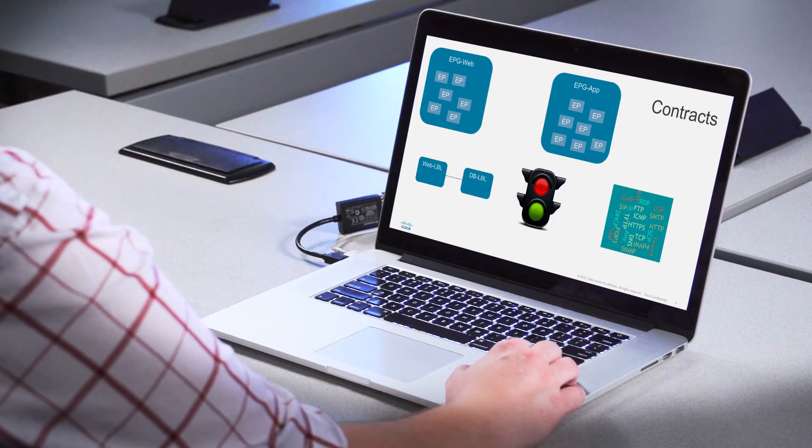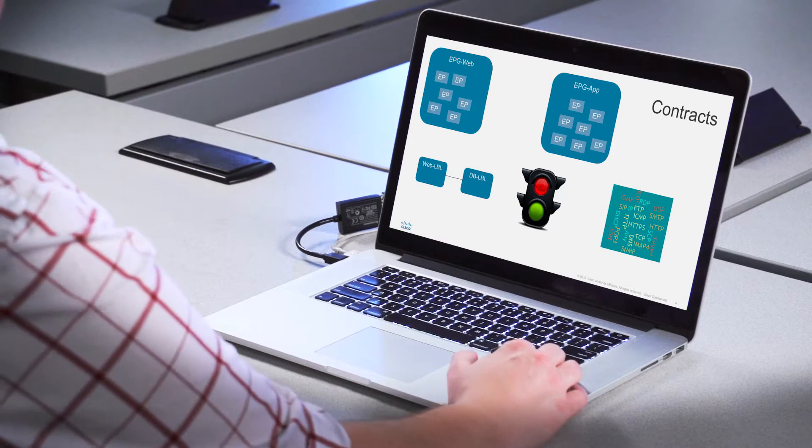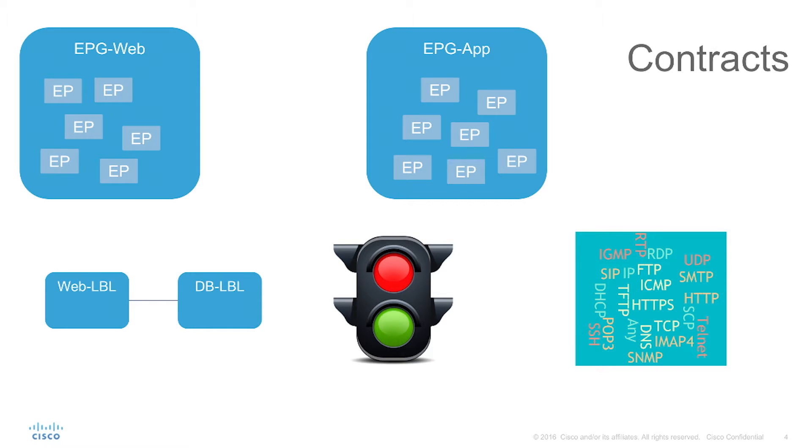But once we start working towards that app-centric model, the IP addresses matter less than the actual policy. So now we have endpoint groups — let's call them EPG Web and EPG App. We're using the web/app/database model to describe applications. EPGs generally represent either tiers of applications, layer four through seven services, or common services like DHCP and DNS.